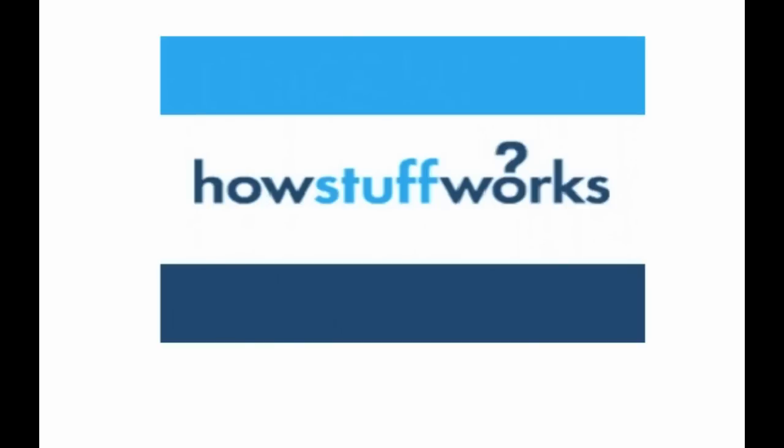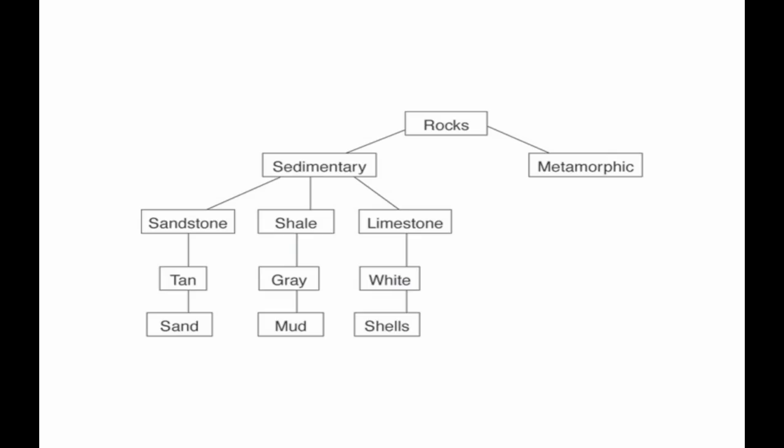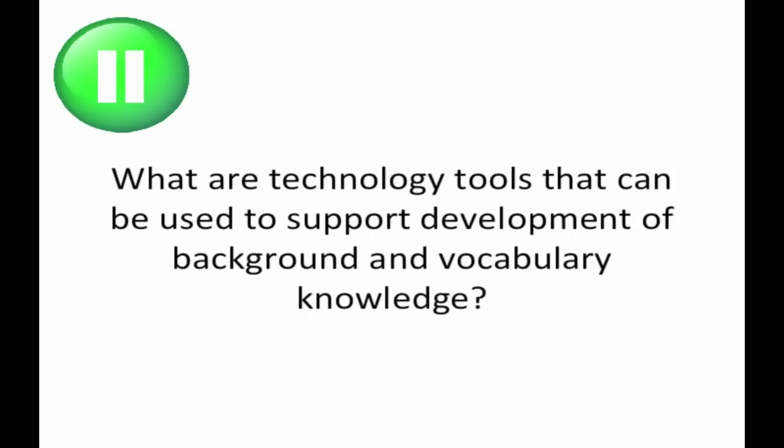Sites such as HowStuffWorks include content-specific illustrations to help learners grasp sequences, interactions, and relationships. Finally, maps and diagrams showing relationships among words and concepts can also help students connect new words to those that are already known. Pause the video and answer the question: what are technology tools that can be used to support development of background and vocabulary knowledge? If you've answered it, please go on when ready. If you would like a brief review, please review the previous section.